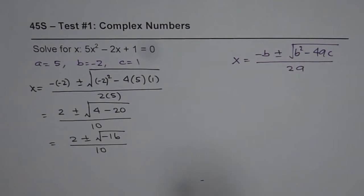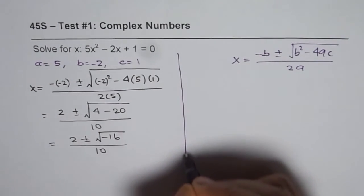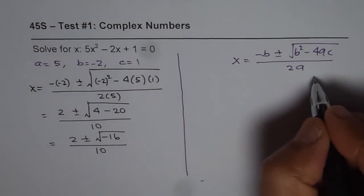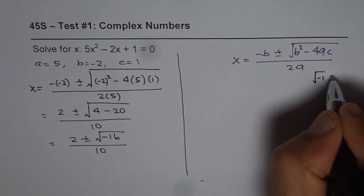Now in the radical, we have negative 16. That clearly shows that the roots are imaginary. So what is square root of -1? We know √(-1) = i.